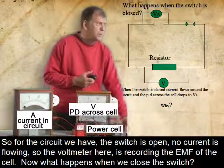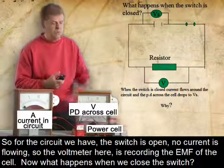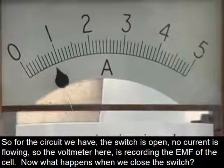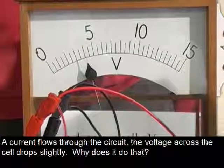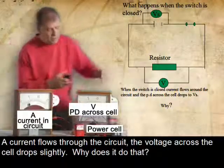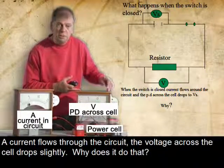Now, what happens when we close the switch? The current flows through the circuit, the voltage across the cell drops slightly.